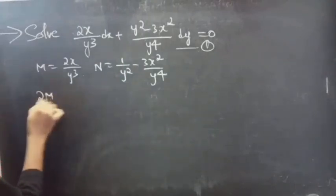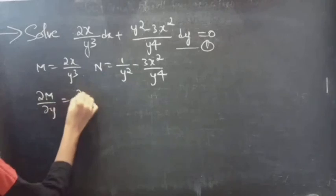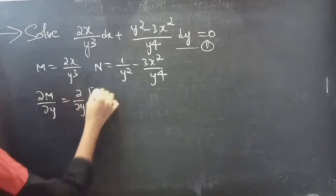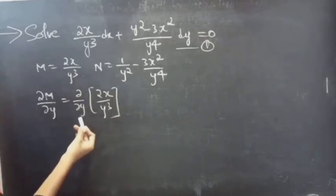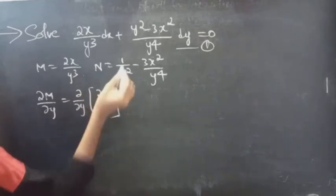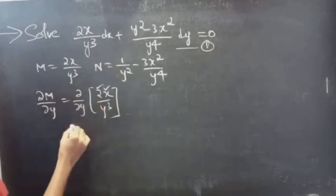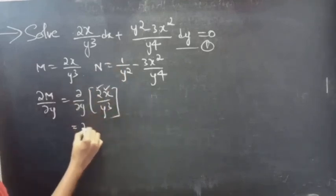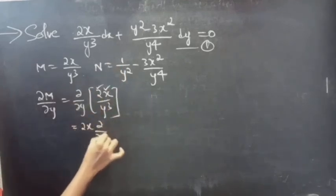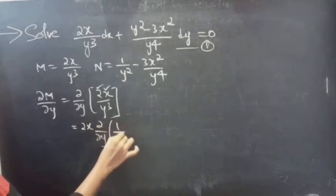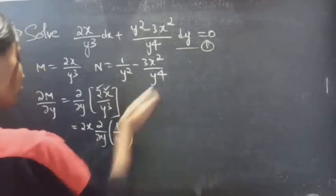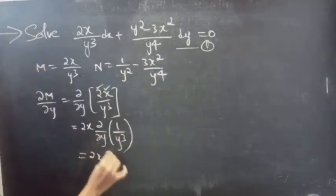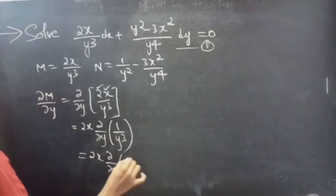Now let's find the partial derivative of M with respect to y. This is equal to ∂/∂y of M = 2x / y³. Since we are doing the partial derivative with respect to y, x is treated as constant. So 2 and x are constant; we write this as 2x · ∂/∂y of y⁻³.